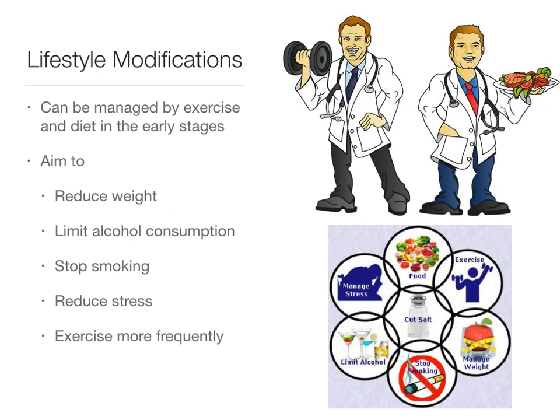Finally, those at risk of hypertension can make lifestyle modifications to reduce the severity or risk of the disease. In general, you should aim to reduce weight, limit alcohol consumption, stop smoking if you're a smoker, reduce stress, and exercise more frequently. All of these will help to reduce the risk of hypertension as well as many other lifestyle diseases.